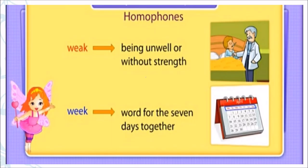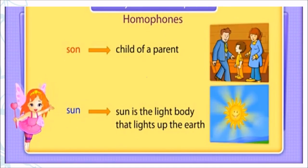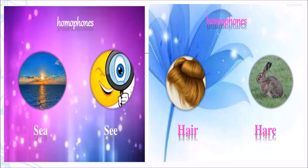Next, we have 'weak' and 'week'. The word 'weak' means being unwell or without strength. The other word 'week' means the word for 7 days together. Next, we have 'son' and 'sun'. The word 'son' means child of a parent. The other word 'sun' means the light body that lights up the earth. Also: 'see/sea' and 'hare/hair'.